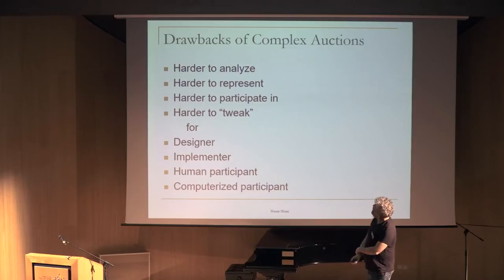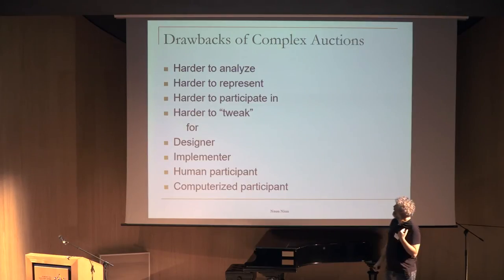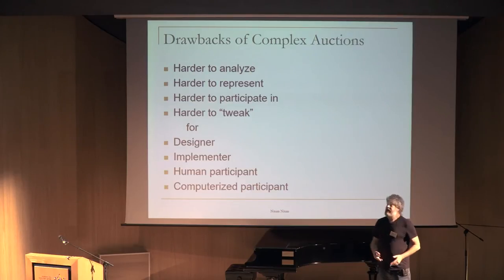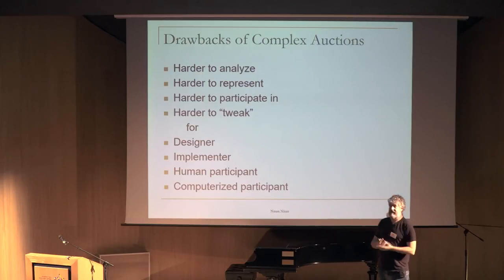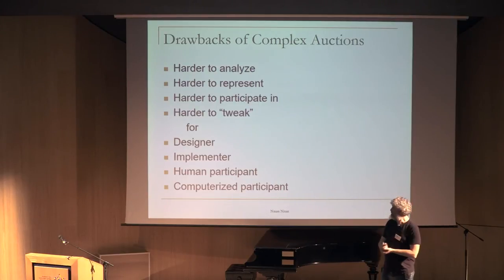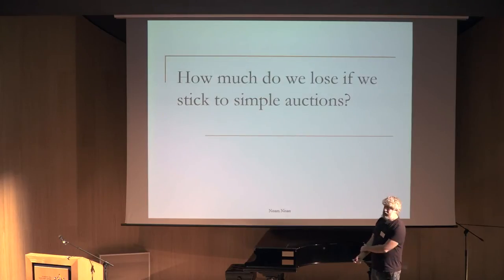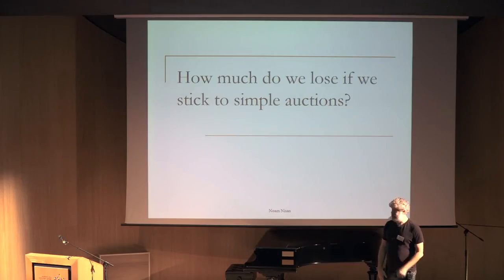We don't like complexity — neither as researchers, computer scientists, nor as human beings. Complex auctions are difficult to analyze, to represent in a computer, and for participants to engage with because our brains don't manage complicated things well. Also, simple things are easy to tweak; complicated things are not. So the question becomes: if we insist on only doing simple things, how much are we going to lose?